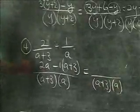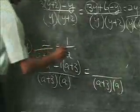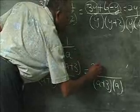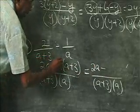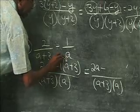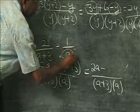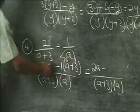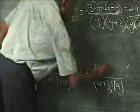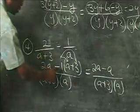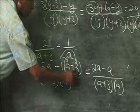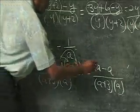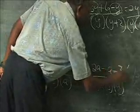Now let's deal with the simplification. We have 2a, which we can do nothing about. But this minus one has to be multiplied by both a and by a plus three. Minus one by a is minus a. Minus one by a plus three: negative by a positive is negative, giving us minus 3.